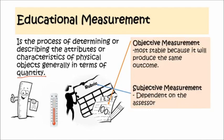In measurement, we have two types. The first is objective measurement, which is testing itself — it is the most stable type because it produces the same outcome no matter how many times you repeat the process. One example of objective measurement is the multiple-choice type of test, wherein there is only one answer to a particular item. No matter who takes the test or who marks it, there is only one single correct answer that is true for everybody.